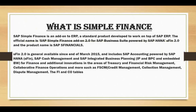Simple Finance also includes finance and additional innovations such as treasury and risk management, and collaborative financial operations such as FSCM - including credit management, collections, disputes - and FI and CO. What are the major changes in Simple Finance compared with the traditional financial system? You need to concentrate on FI, CO, FSCM, treasury and risk management, and cash and liquidity, as these are highly integrated in the migration of data.